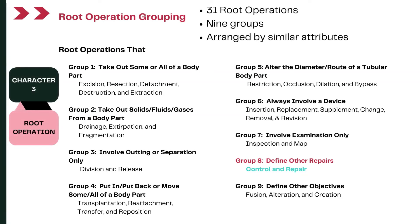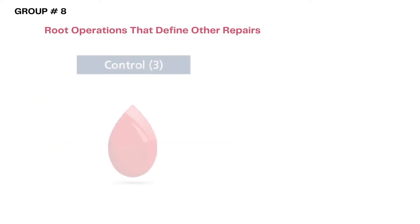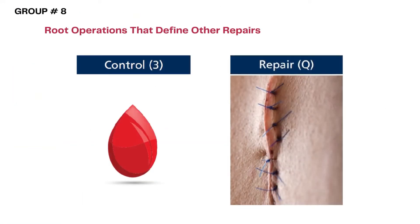There are a total of 31 root operations in the Medical and Surgical section alone, and these root operations are divided into nine groups based on similar attributes of surgical procedures. Today we are looking at the eighth group, which talks about root operations that define other repairs. There are only two root operations in this eighth group: Control and Repair.